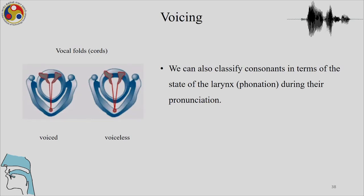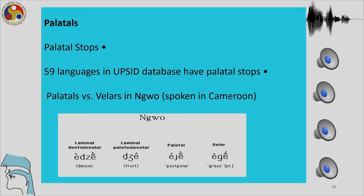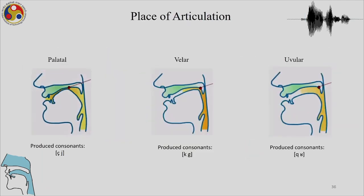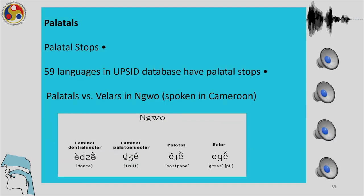Most sounds will be voiced or voiceless — that is the state of the glottis. We just talked about palatals — that is the palatal region. Let us look at Ngo, a language spoken in Cameroon. Ngo has palatals versus velars: the first sound is the laminal denti-alveolar, the second is the laminal palato-alveolar, the third and fourth are palatal stops.